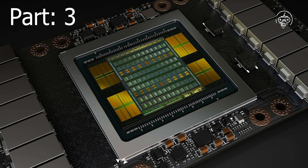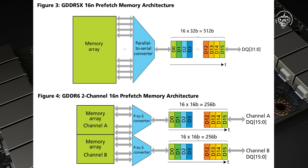This article will discuss HBM2 and GDDR6, two of the newest and most popular memory types for modern GPUs. You'll learn the usage, functions, and specifications, which will help you choose the right one for your requirements. HBM2 vs GDDR6: a detailed comparison.